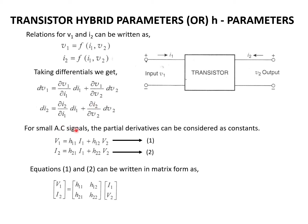For small AC signals, these partial derivatives can be considered as constants. Hence, this can be written as V1 = H11·I1 + H12·V2, and I2 = H21·I1 + H22·V2. These two equations can be written in matrix form as [V1, I2] = [H11 H12; H21 H22] · [I1, V2]. Here, H11, H12, H21, and H22 are said to be transistor hybrid parameters.